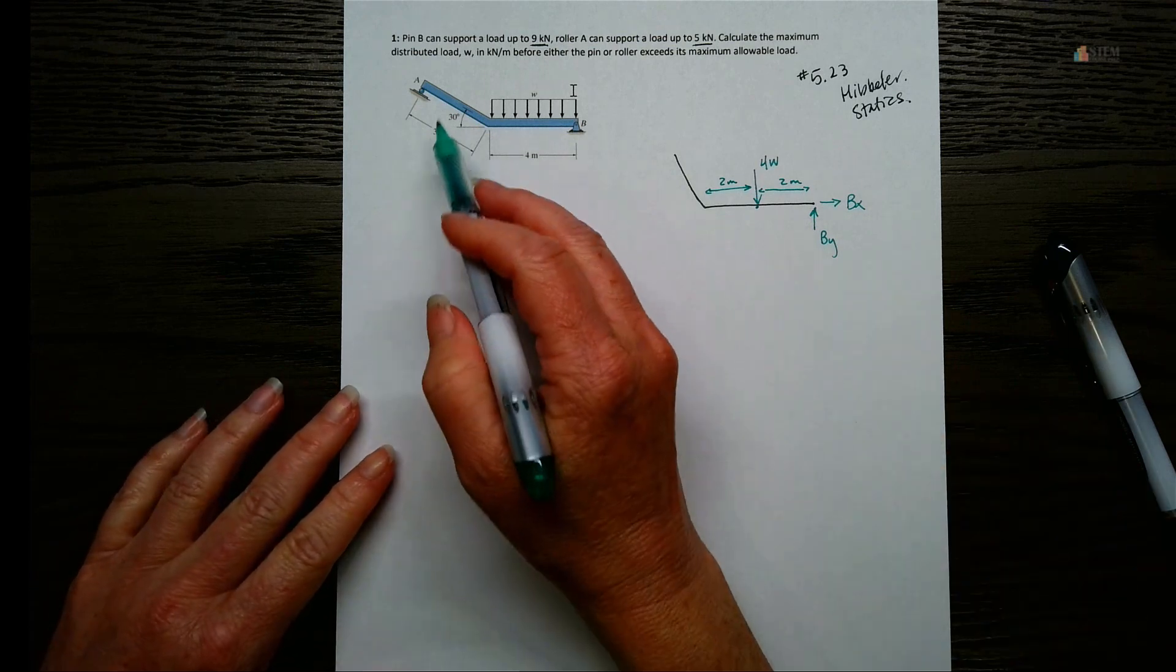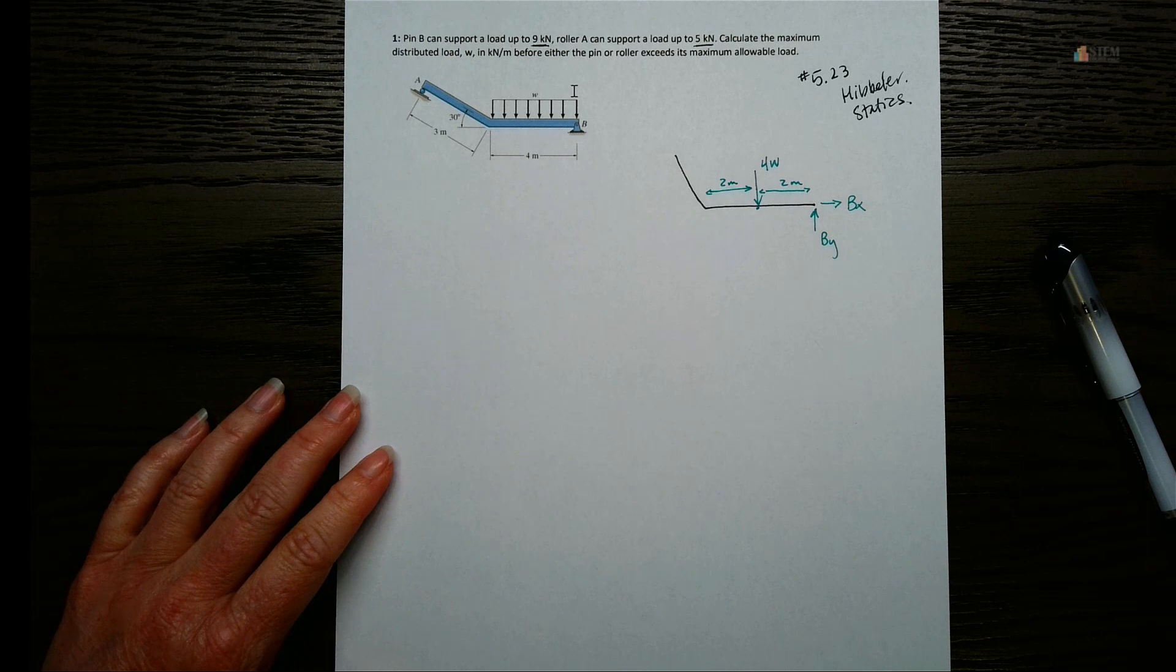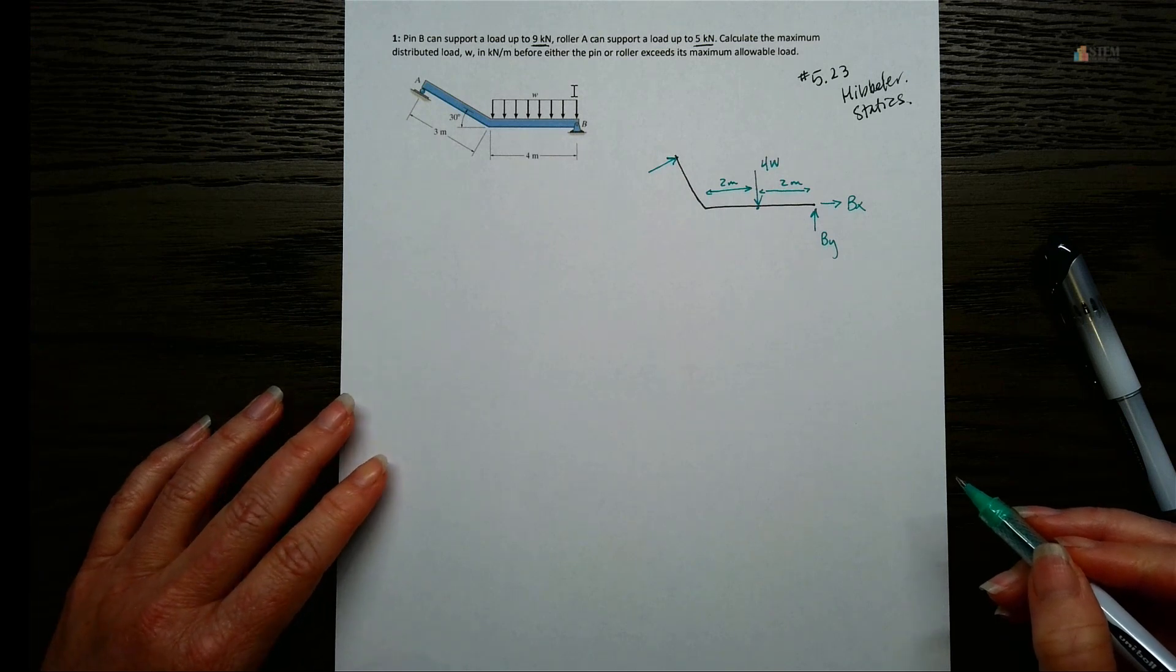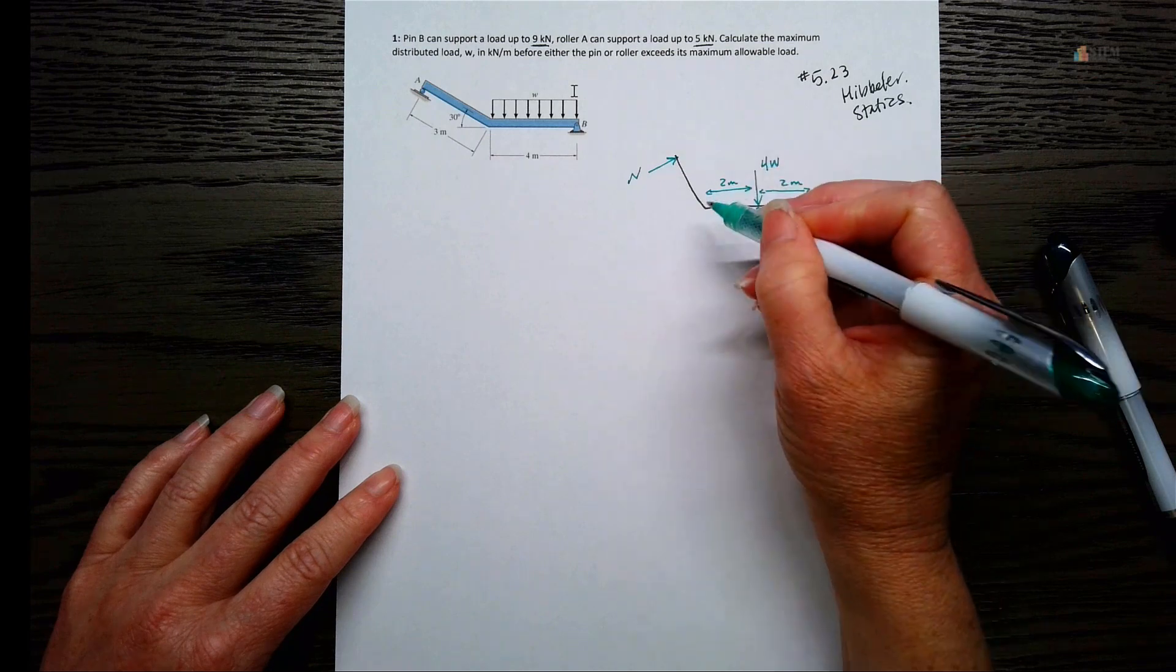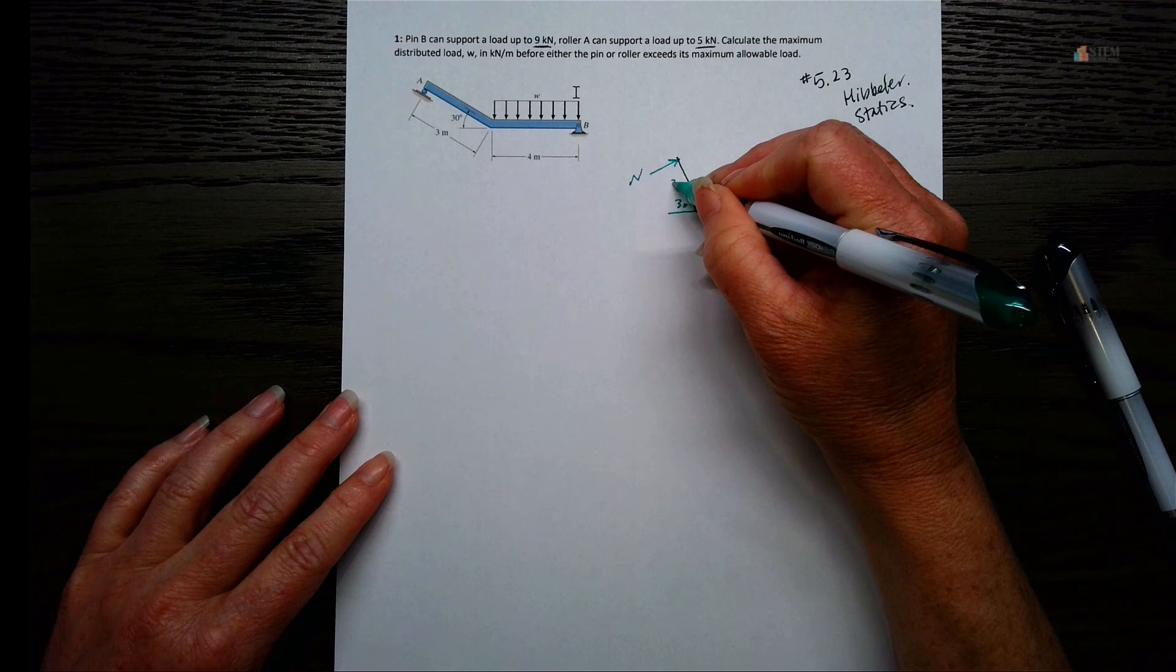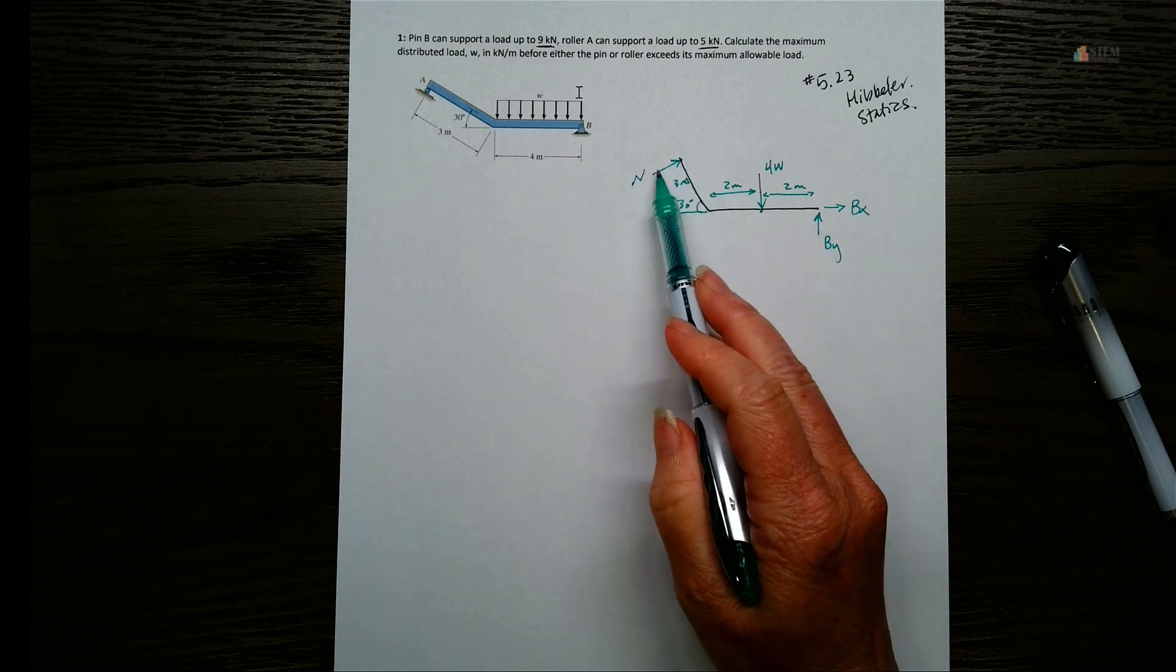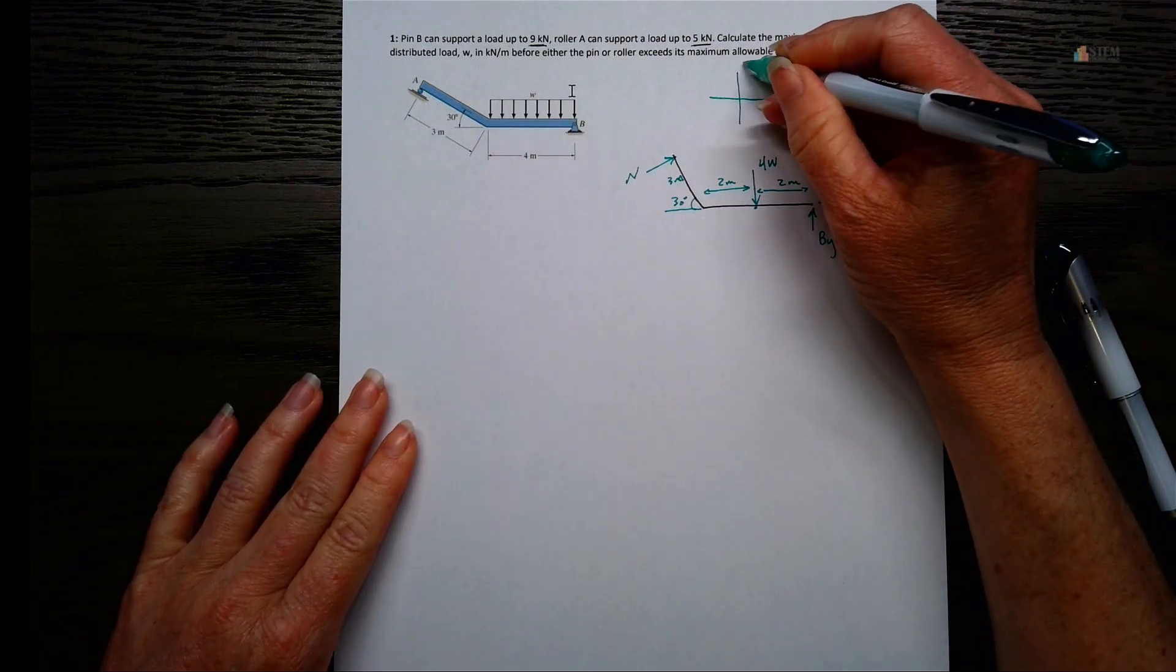Let's put our forces on here. First of all, we've got a pin. A pin always has an X and a Y component. So we're going to have BY, BX. I just chose those directions. I have no idea if they are right or not. And then we've got this distributed load. Now I don't know what W is, right? W is what we're trying to look for. But I do know this is 4 meters long. So what I'm going to do is put this right here and we'll have 4 times W. Now, remember with the distributed load, the load is going to act at the center of the uniform area here. So right here would be 2 meters from point B. And then 2 meters to where the beam bends.